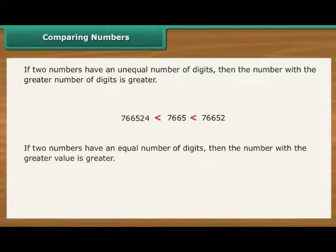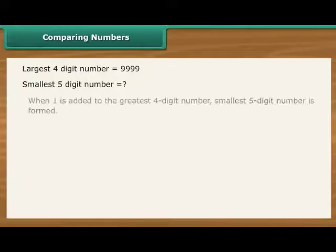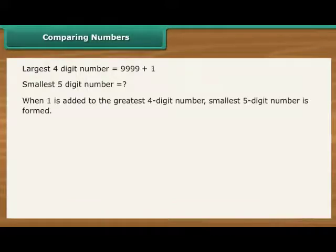If two numbers have an equal number of digits, then we need to compare numbers at each position. The largest four-digit number is 9999. What should be added to this number to make smallest five-digit number? The answer is, we need to add 1.